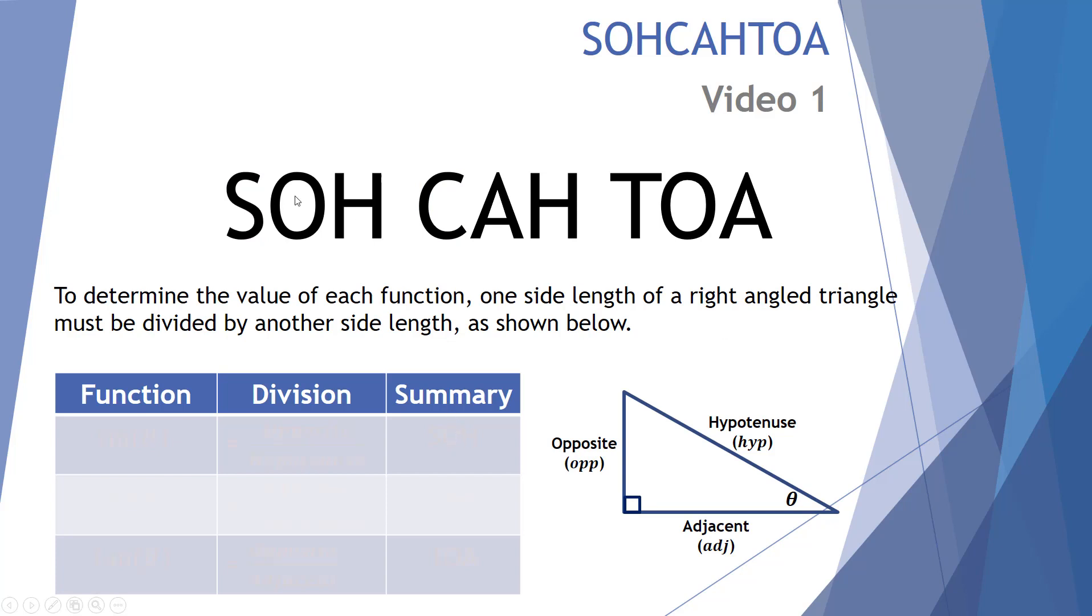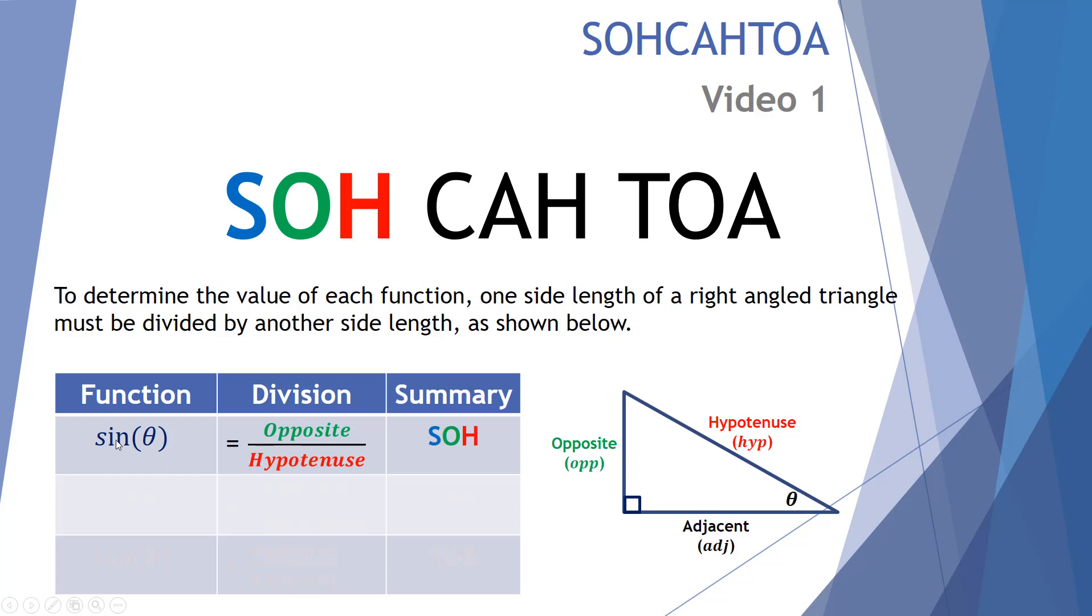First of all, these values sine, cos, and tan come about by dividing one side length of the right angle triangle by another side length. So let's have a look.